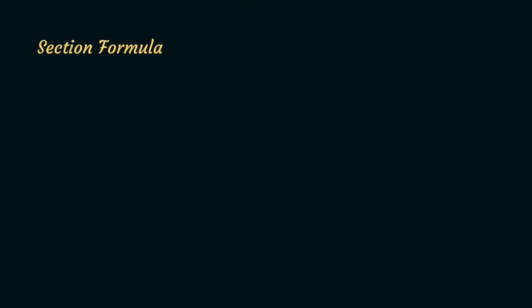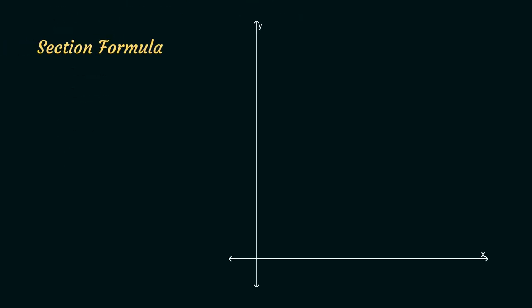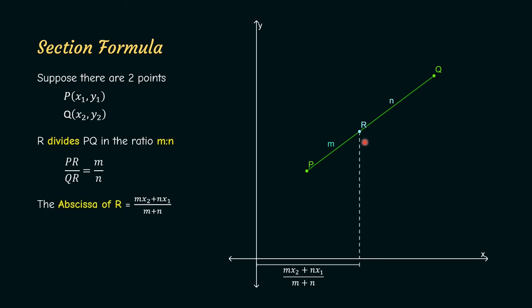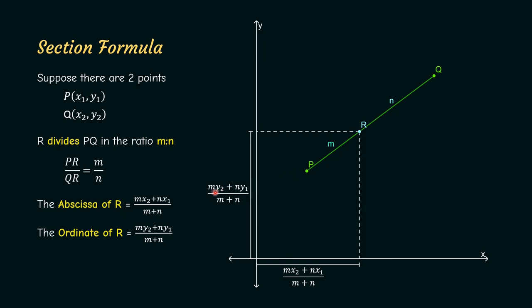The second formula is the section formula. In a plane, imagine there are two points P and Q, and we need to find a point R that divides PQ internally in the ratio m to n — in other words, PR divided by RQ equals m by n. According to the section formula, the abscissa of R will be equal to (mx2 plus nx1) by (m plus n). Similarly, the ordinate is equal to (my2 plus ny1) by (m plus n).